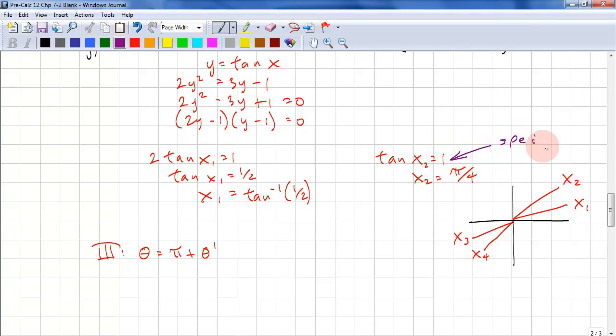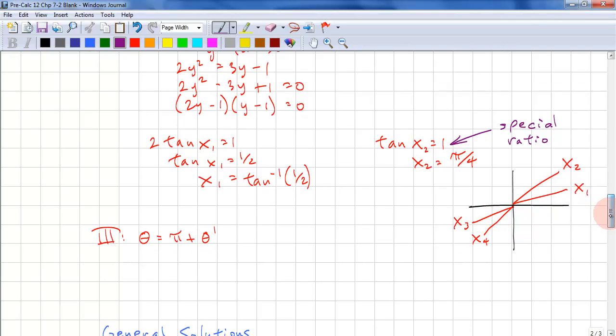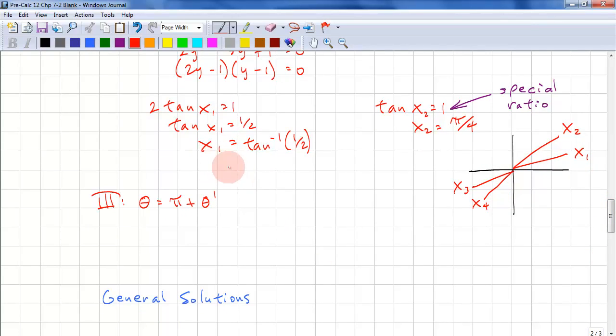Again, we have a special ratio. We have x1, x2. And for tangent, it's symmetrical. And the period is only pi anyways. So we don't really have answers in another quadrant. Now we can do the approximation of x1, and that's 0.4636. And if you want to do the approximation for x3, x3 would be approximately equal to pi plus 0.4636. And that's approximately 3.6052.